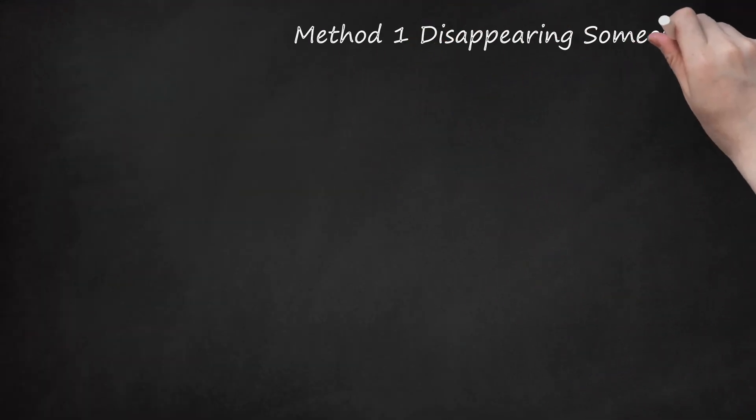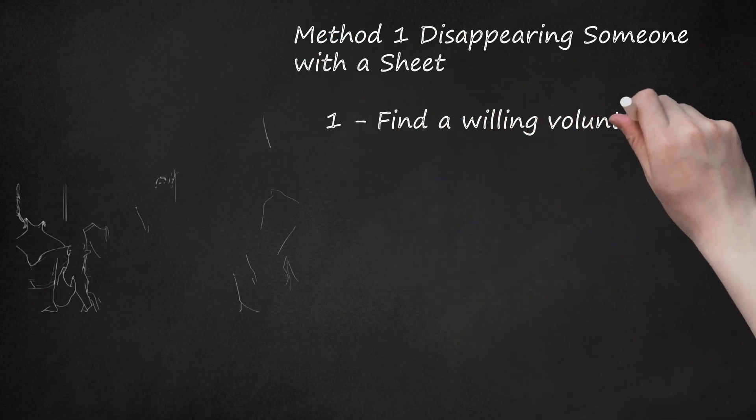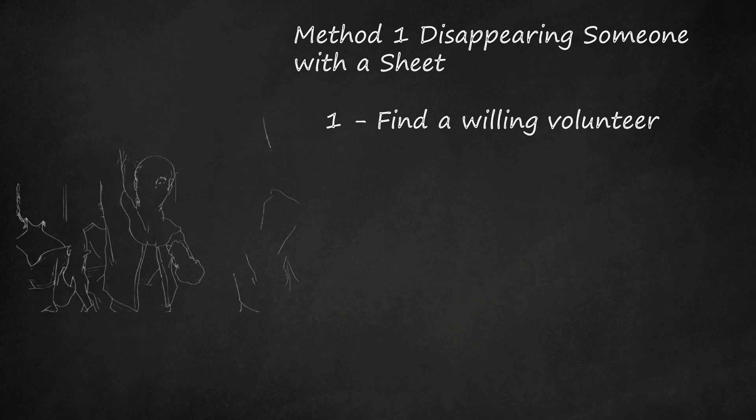Method 1: Disappearing Someone with a Sheet. Step 1 - Find a willing volunteer. This person is required to go along with the act and appear to be clueless as to how you did it. They are crucial for the trick. Explain in detail the trick to them and their role to see if they're willing.